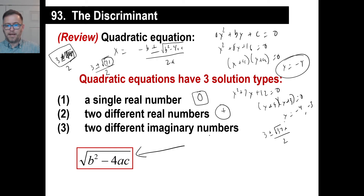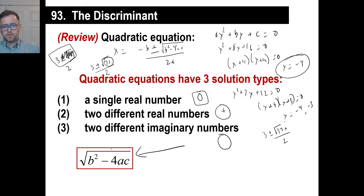The two different imaginary numbers will happen if the number under the discriminant — the value under the square root sign — is negative. So that's all we're doing today: figuring out what kind of answer it's going to be.